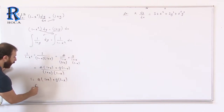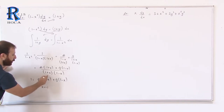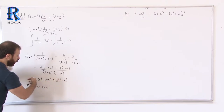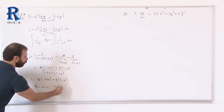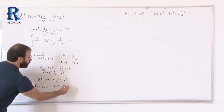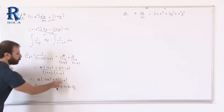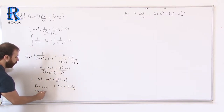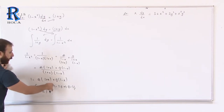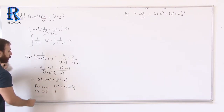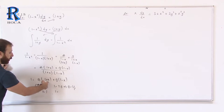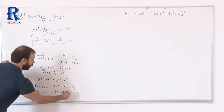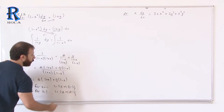For example, set x equal to minus 1: the A term becomes 0, and we get 1 equals 2B, so B equals 1/2. To find A, set x equal to 1: the B term becomes 0, and we get 1 equals 2A, so A is also 1/2.